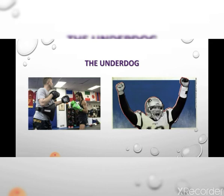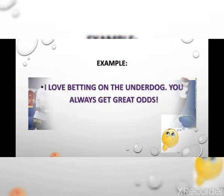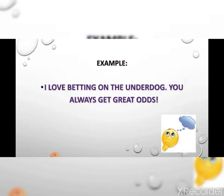The underdog. An underdog is a person or group in a competition who is popularly expected to lose. The party or team expected to win is called the favorite or top dog — this is the antonym of underdog. In the case where an underdog wins, the outcome is called an upset. Example: I love betting on the underdog — you always get great odds.